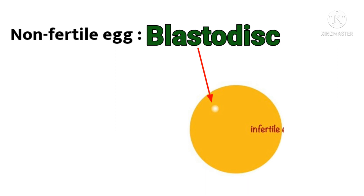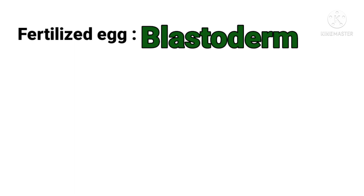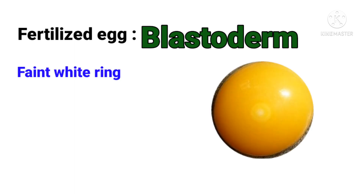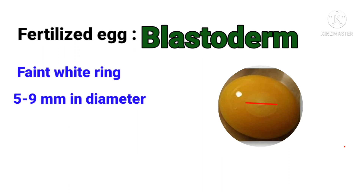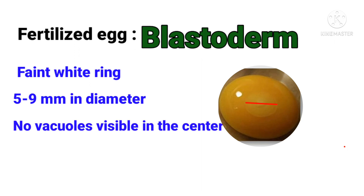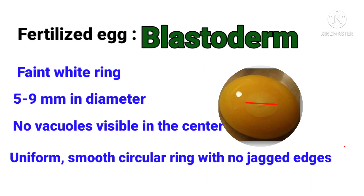When the egg is fertilized, the germinal disc is called a blastoderm. There are four main characteristics associated with the fertile germinal disc. Number one: the germinal disc is faint — it is not a solid white spot; it consists of a faint white ring which may have a solid white spot in the center. Number two: the germinal disc is about two to three times larger than the infertile germinal disc, that is five to nine mm. Number three: usually there are no vacuoles visible in the center of the ring; a few vacuoles may be present on the edge. Number four: the edge of the germinal disc is very smooth and uniform, with the ring predominantly circular and no jagged edges.